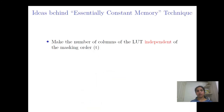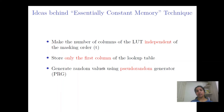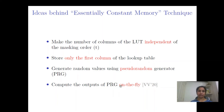Since we want to achieve optimized RAM memory, the idea behind our contribution is to make the number of columns of the lookup table independent of the masking order. We will be storing only the first column of the lookup table and not the n-1 remaining columns. The randomness required for computation is generated using a PRG, computed on the fly. This idea originates from our CHES 2020 paper on second-order lookup table compression, which we are reusing in our current contribution.